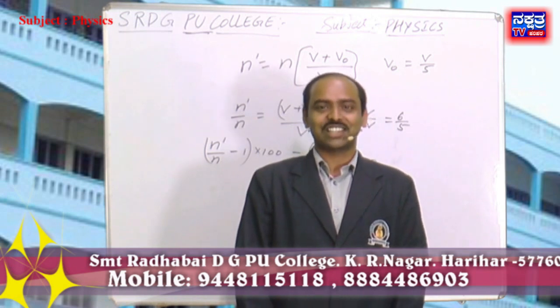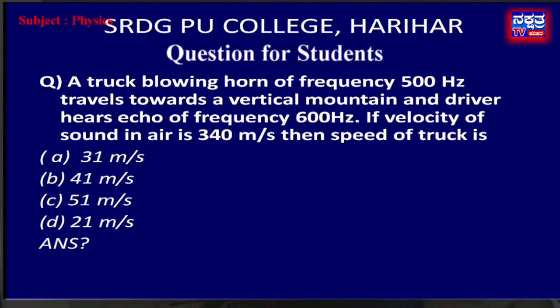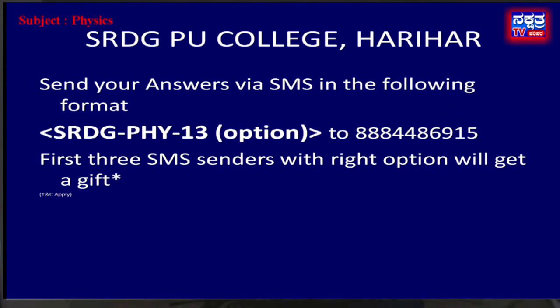Student challenge question: a truck blowing a horn of frequency 500 Hz travels towards a vertical mountain and the driver hears an echo of frequency 600 Hz. If the velocity of sound in air is 340 m/s, the speed of the truck is: option a) 31 m/s, option b) 41 m/s, option c) 51 m/s, option d) 21 m/s. Send your correct answer in the format SRDG-PHY-13 with your option via SMS to 3884486915.